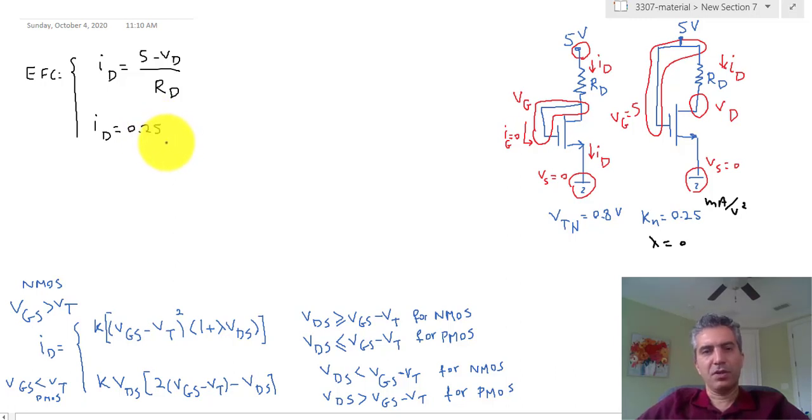Now VGS in my case is equal to VG minus VS. And VGS, I know it's 5 volts. And VS is 0, so VGS is actually 5. So that's given - 5 minus 0.8 to the power of 2 is my current.